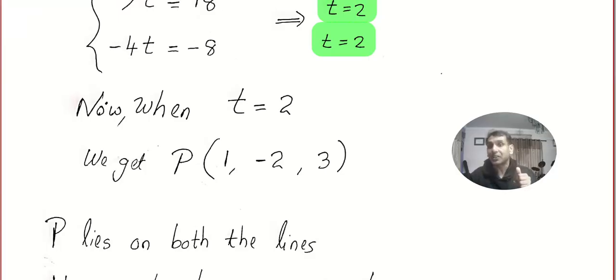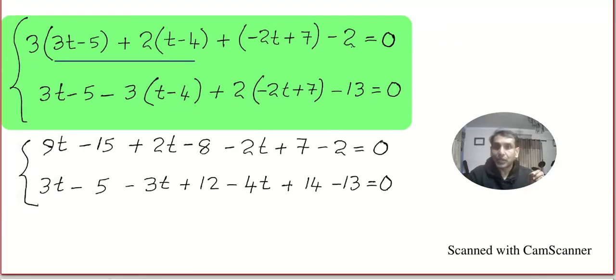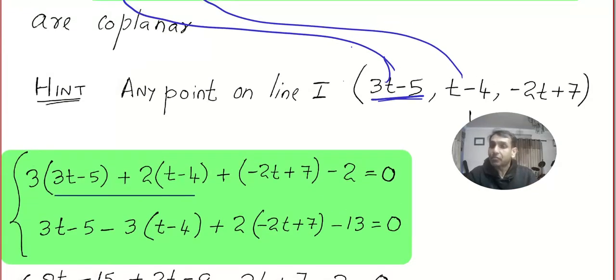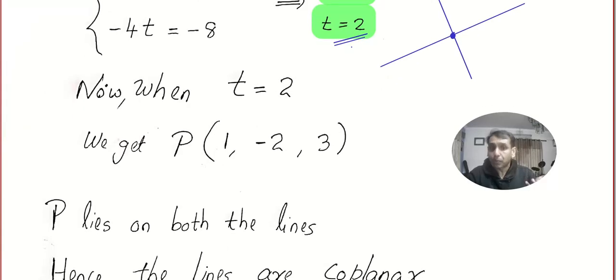Now the last part. Look, they are intersecting, great. So they are coplanar. Now the second question: What is the common point? Very simple. You take this t value, put it back into the parametric form, and you will get the common point.